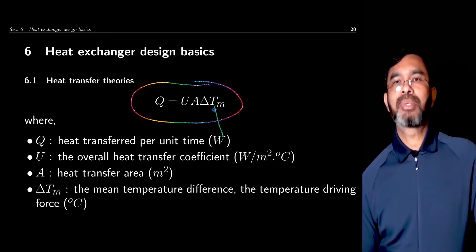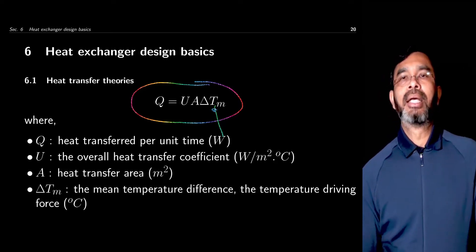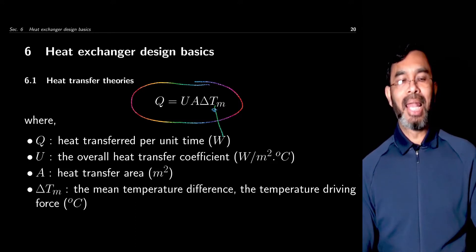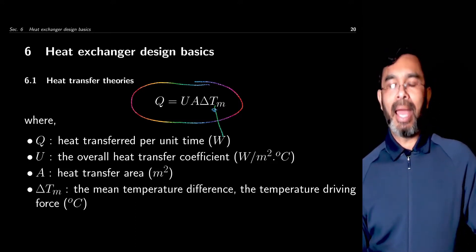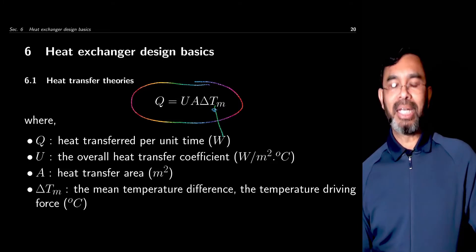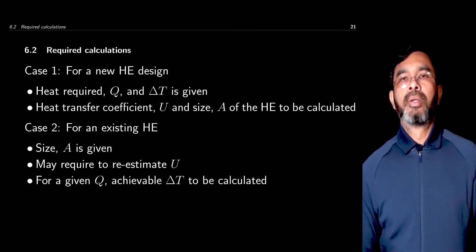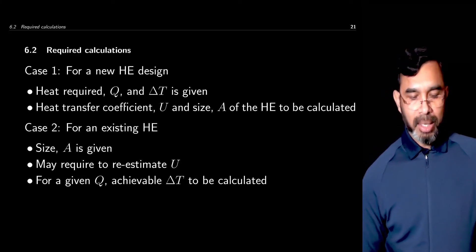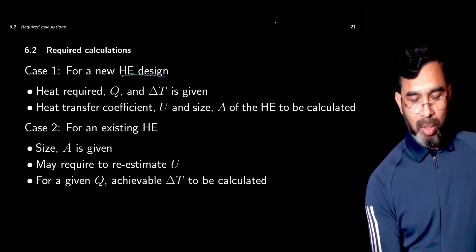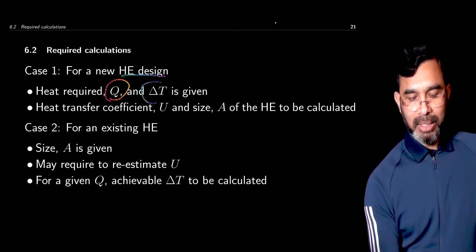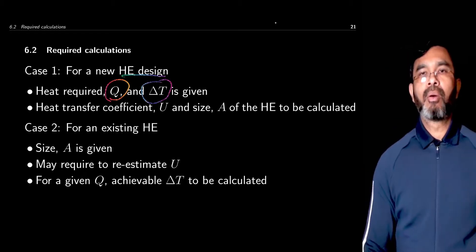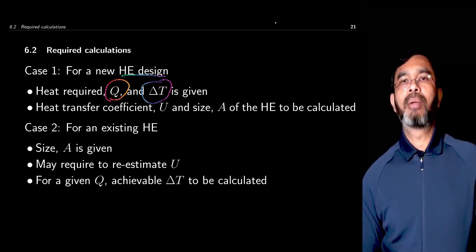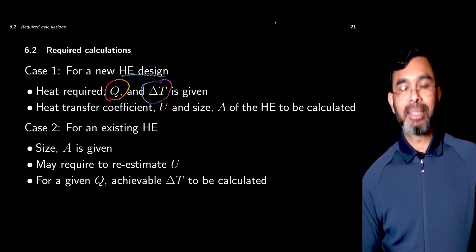We use the subscript M here to denote that the temperature difference may not be the same throughout the length of the heat exchanger, so we need to have some estimation of the mean temperature difference. For heat exchangers, two types of calculations may need to be done. For a new heat exchanger design, we may know the heat duty and the temperature difference, meaning we know what the hot fluid and cold fluid are, and what the temperatures and flow rates are.